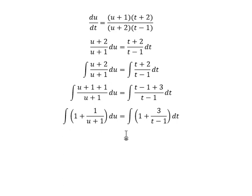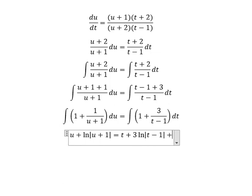The integration of 1 gives u. The integration of 1 over u plus 1 gives ln of the absolute value of u plus 1. Next, 1 gives t, and we have ln of the absolute value of t minus 1, plus c.